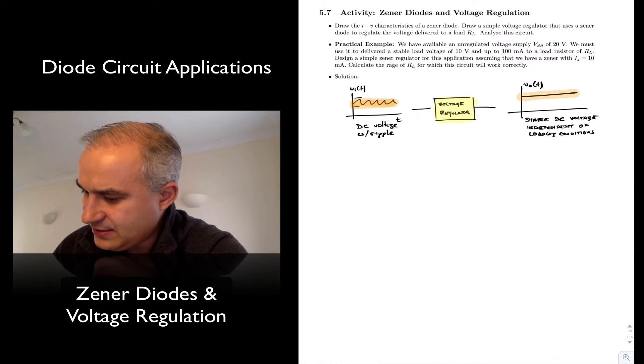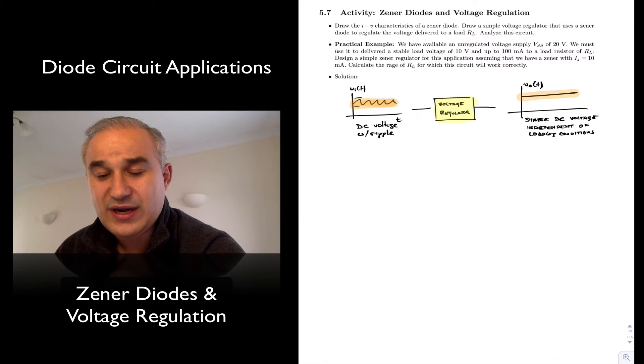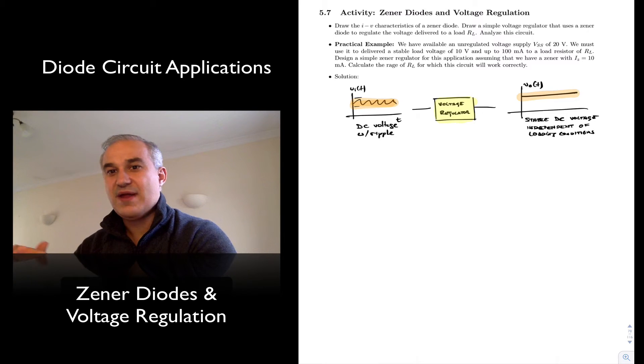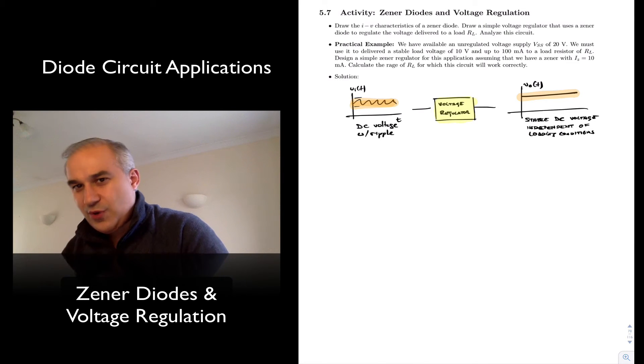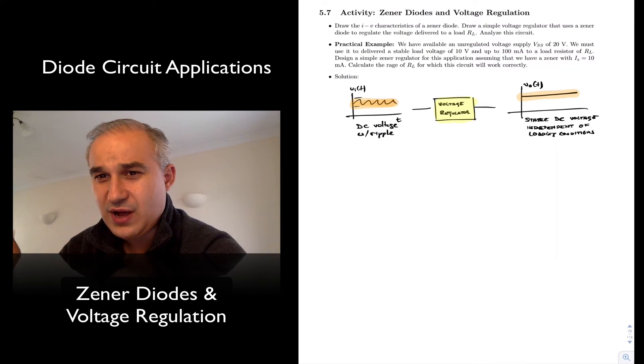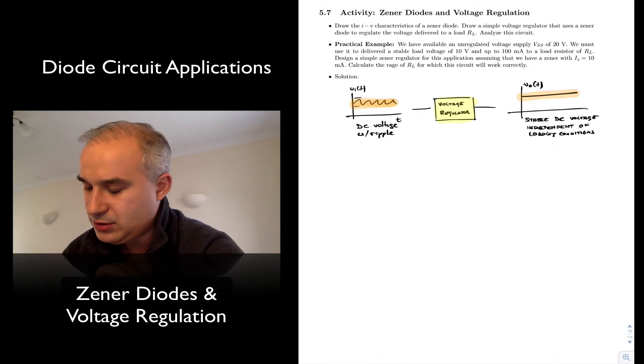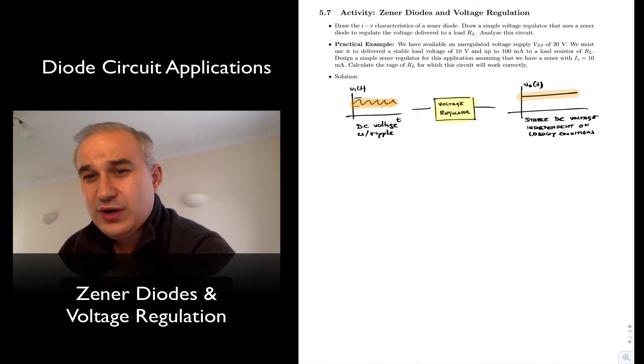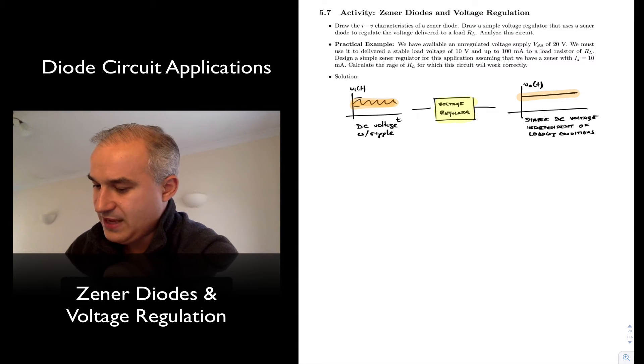The simplest device that will enable you to do something like this will be with a Zener diode. Now you can get better and better when you combine a Zener with an operation amplifier and you can get better regulators by adding complexity. But in terms of a single device that will enable you to do this, a Zener diode may be useful.